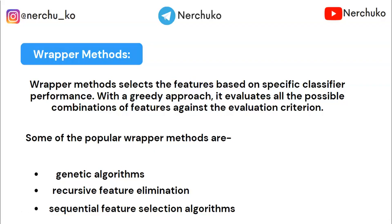If a feature improves the model, it is included in the final dataset. If not, it is removed. This is essentially a greedy method where we train across different possible sets of features.